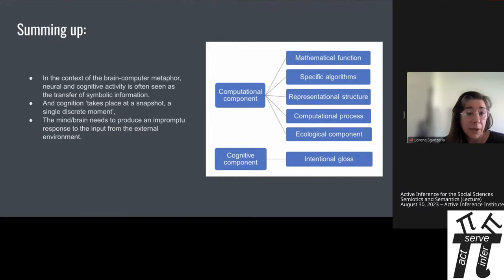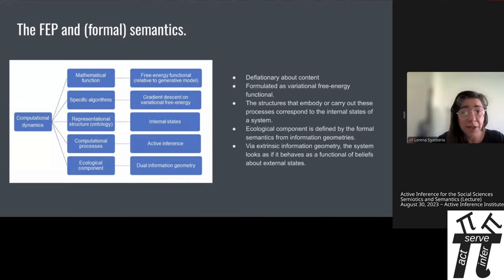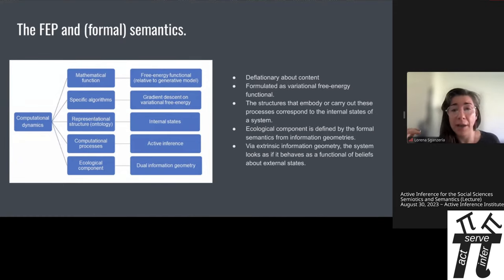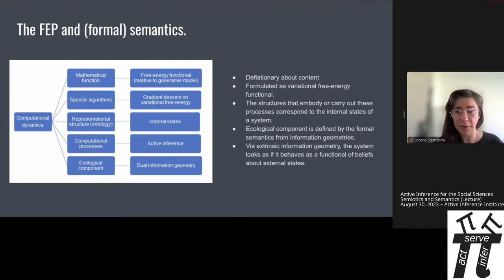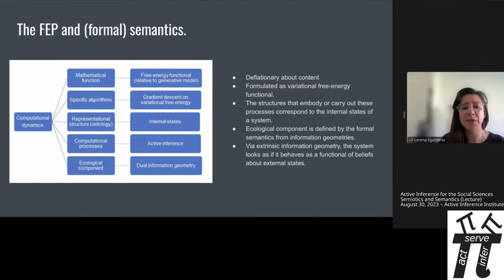Summing up, what we had before was a computational model that did not allow for the intelligibility of cognitive components like intention and motivation. Brain-computer metaphors treat neural and cognitive activity as transfer of symbolic information, with cognition as a snapshot of that transfer — difficult to explain as biologically plausible. The mind and brain need to produce an impromptu response to inputs from the external environment all the time. The idea of formal semantics the authors propose is a deflationary model about content: formal semantics without content, formulated as a variation of the free energy functional, where structures correspond to states in the system, and the ecological component is formalized in terms of two informational geometries — one from dynamics and one from Bayesian cognition.